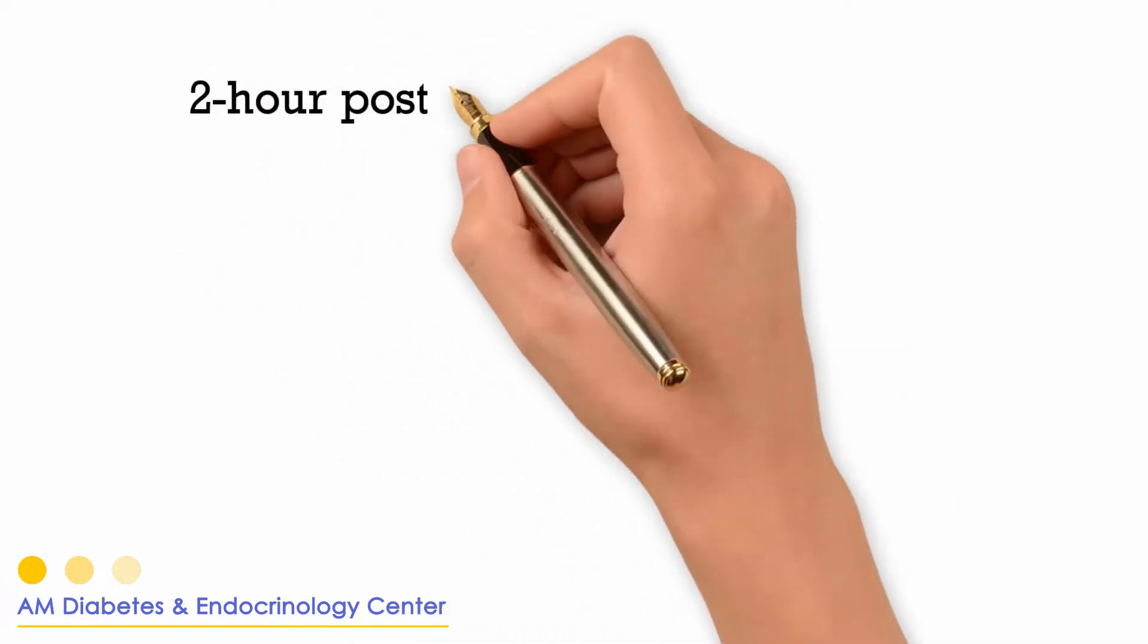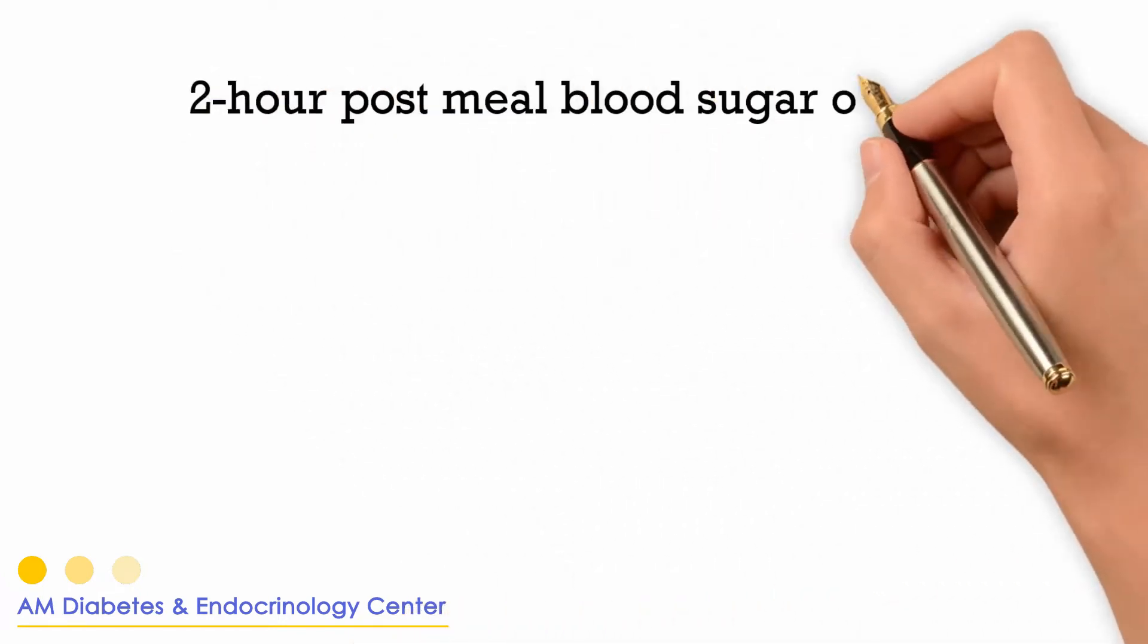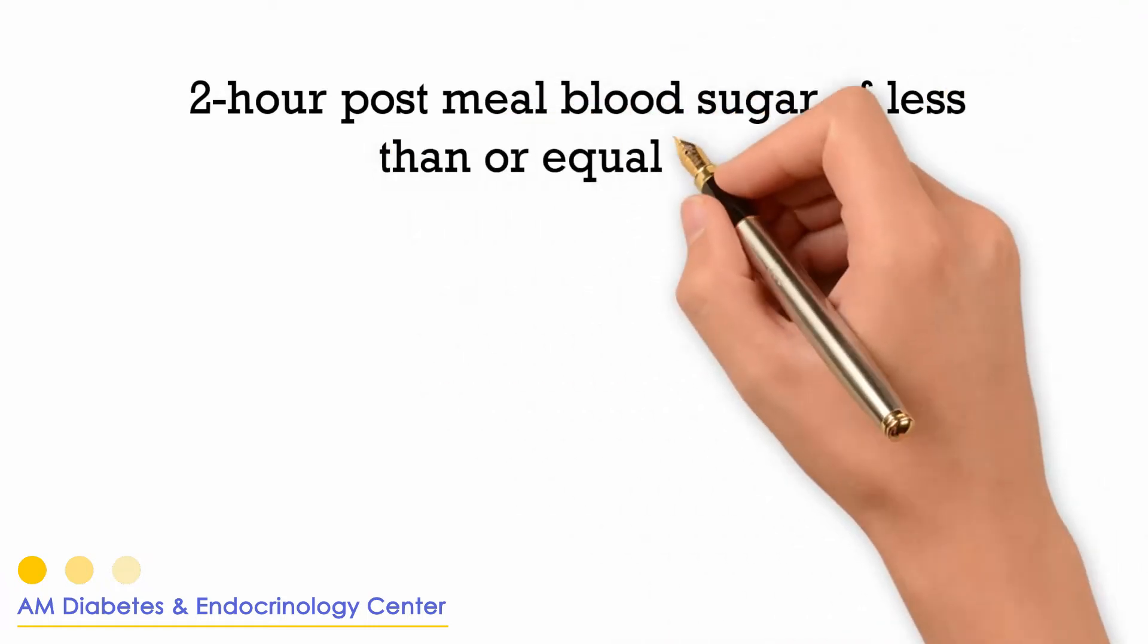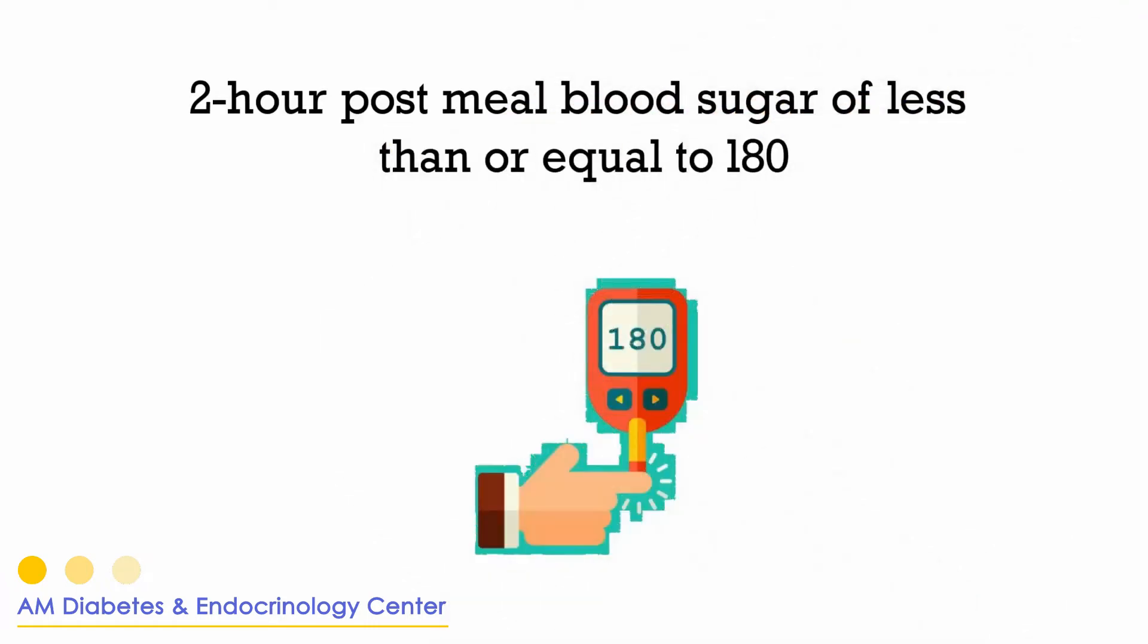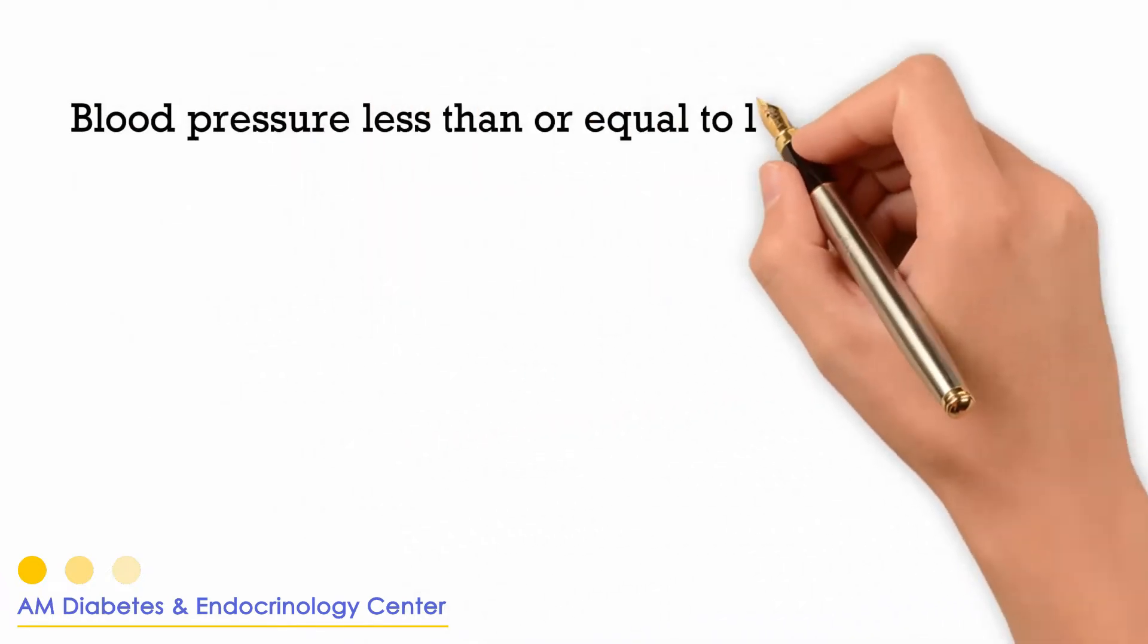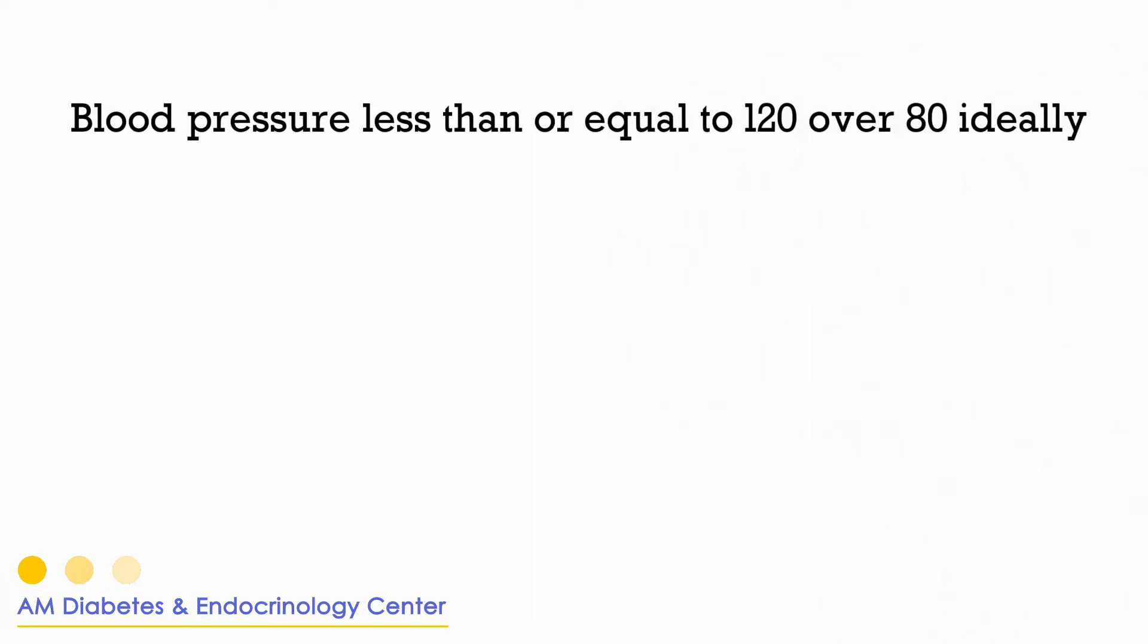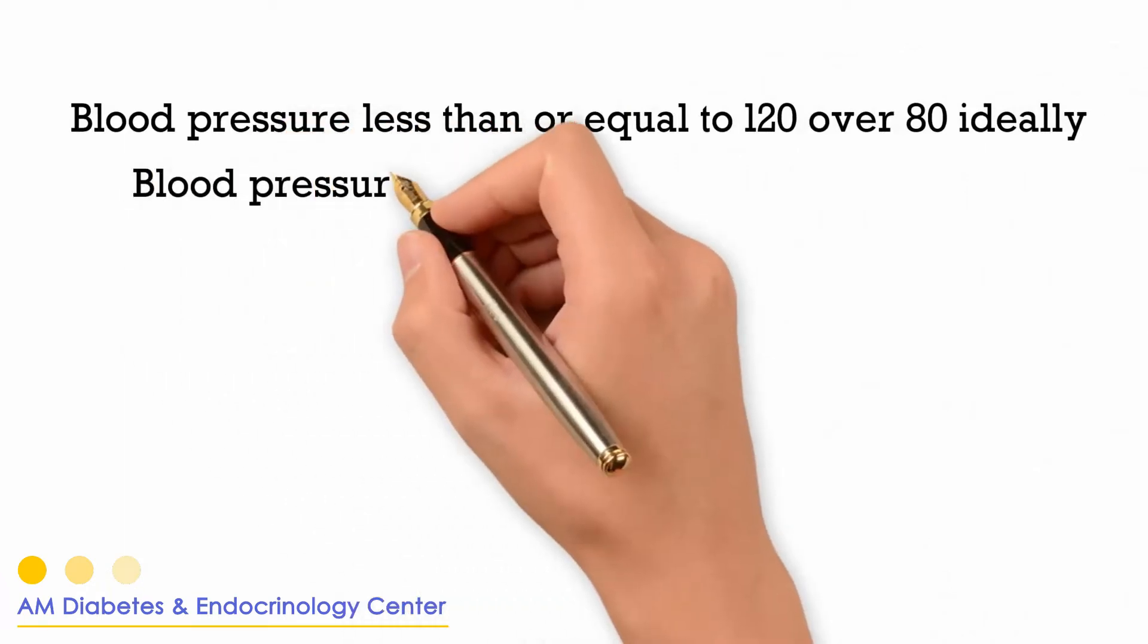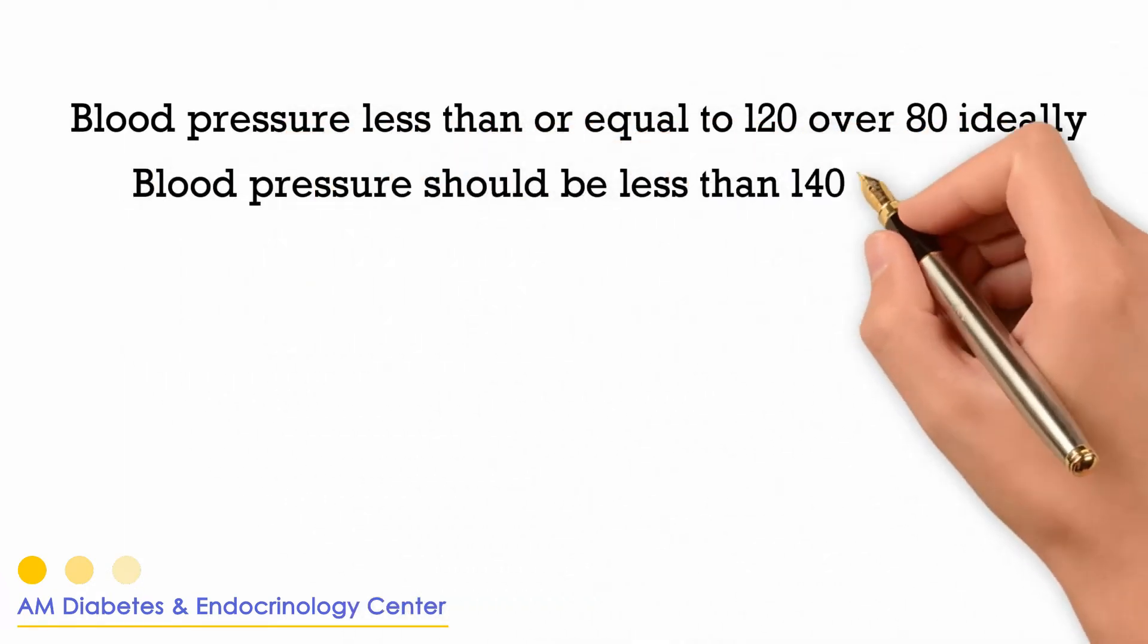2-hour post-meal blood sugar less than or equal to 180. Blood pressure less than or equal to 120 over 80. Ideally, blood pressure should be less than 140 over 90.